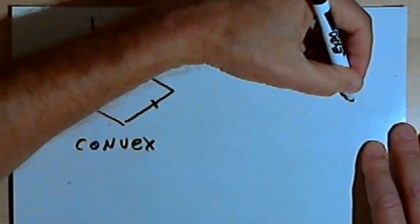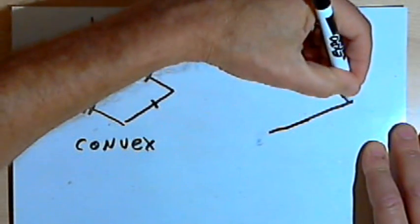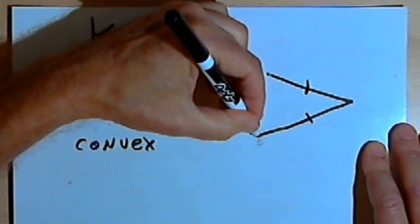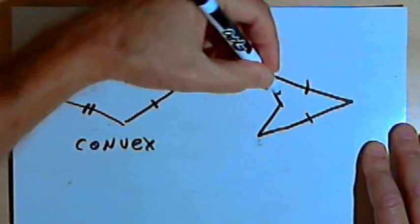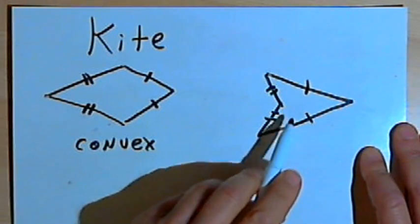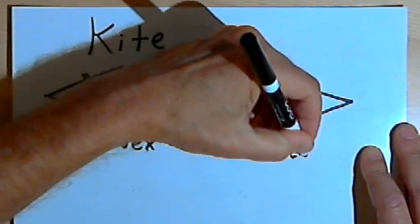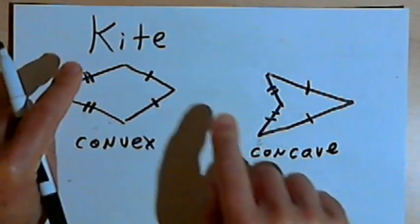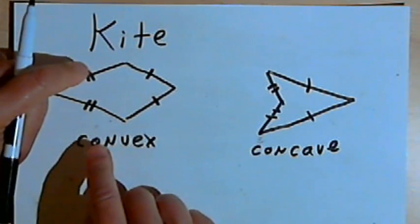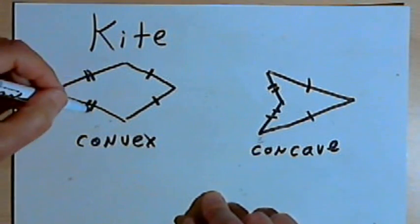There's another kind of kite called a concave kite. In a concave kite, we're going to have two sides that are adjacent to each other and are the same length, and then two other sides that are adjacent to each other and are the same length. But one of the interior angles is going to be more than 180 degrees — in other words, a concave kite kind of pushes back into itself. So kites come in two varieties: convex kites and concave kites. For both of them, we've got two pairs of adjacent sides, and in each pair both sides are the same length.